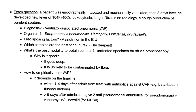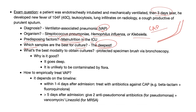Exam question: a patient was endotracheally intubated and mechanically ventilated; three days later they developed fever (104°F), leukocytosis, lung infiltrates on radiology, and a productive cough with purulent sputum. Diagnosis: classic ventilator-associated pneumonia. Organism: given the 3-day timeframe, this is similar to community-acquired pneumonia — Strep pneumo, Haemophilus influenzae, or Klebsiella. The most common predisposing factor is malnutrition in the ICU. The best culture modality is protected specimen brush (PSB) via bronchoscopy — it goes deep and is unlikely to be contaminated by flora.